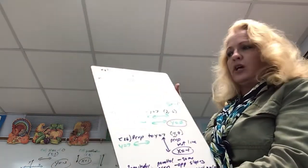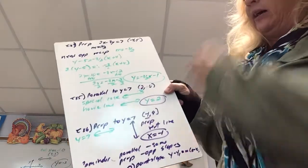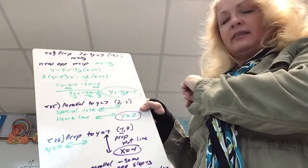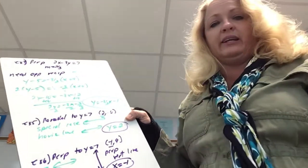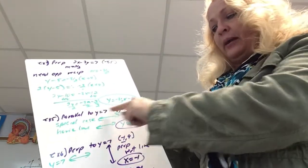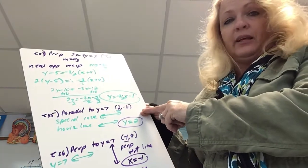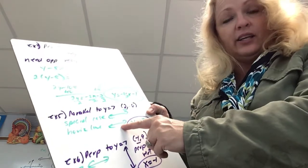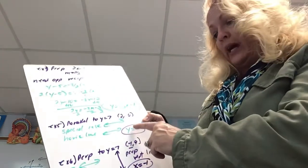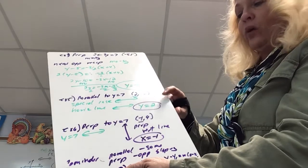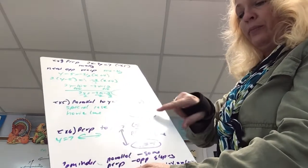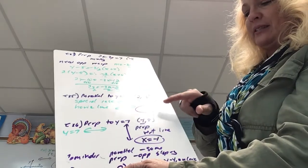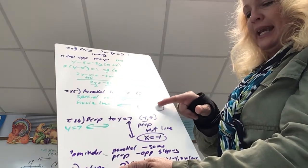Example 5: write an equation of a line parallel to y equals 7 going through the point (2, negative 6). We know this is a horizontal line. The only type of line parallel to a horizontal line is another horizontal line. So if writing the equation of a horizontal line, it's y equals the y-coordinate. Wait — this isn't y equals 2, this should be y equals negative 6.